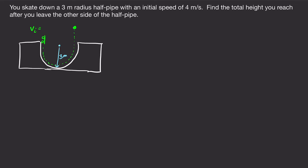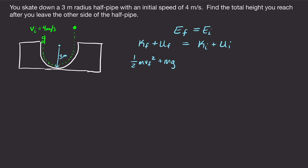Using conservation of energy: final total energy equals initial total energy, meaning final kinetic plus final potential equals initial kinetic plus initial potential. In this case there are no springs, so we only have gravitational potential energy. So kinetic energy is one-half mv squared plus gravitational potential energy, for both final and initial quantities.